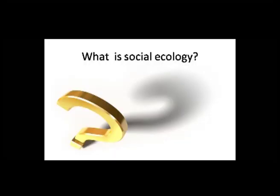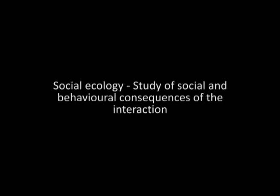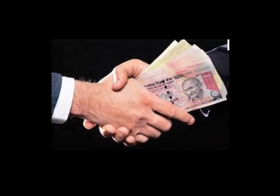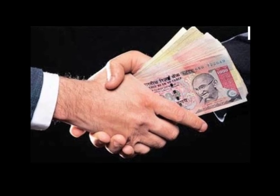Let me ask you a question: do you know what social ecology is? Social ecology is mainly the study of social and behavioral consequences of the interaction between human beings and their environment. It mainly deals with the process of segregation. The social ecology of corruption deals with the corruption activities that risk the society.